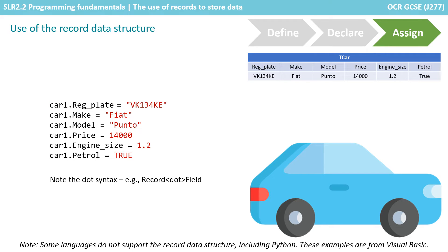Now I can start to assign variables to my car record structure. Here you can see car1.regplate becomes equal to a string, and car1.price becomes equal to an integer. Notice this dot syntax, because of course I could have set up lots of copies of this car record structure — car1, car12, car100 — and each one contains its own structure and set of variables: regplate, make, model, price, engine size, and petrol.